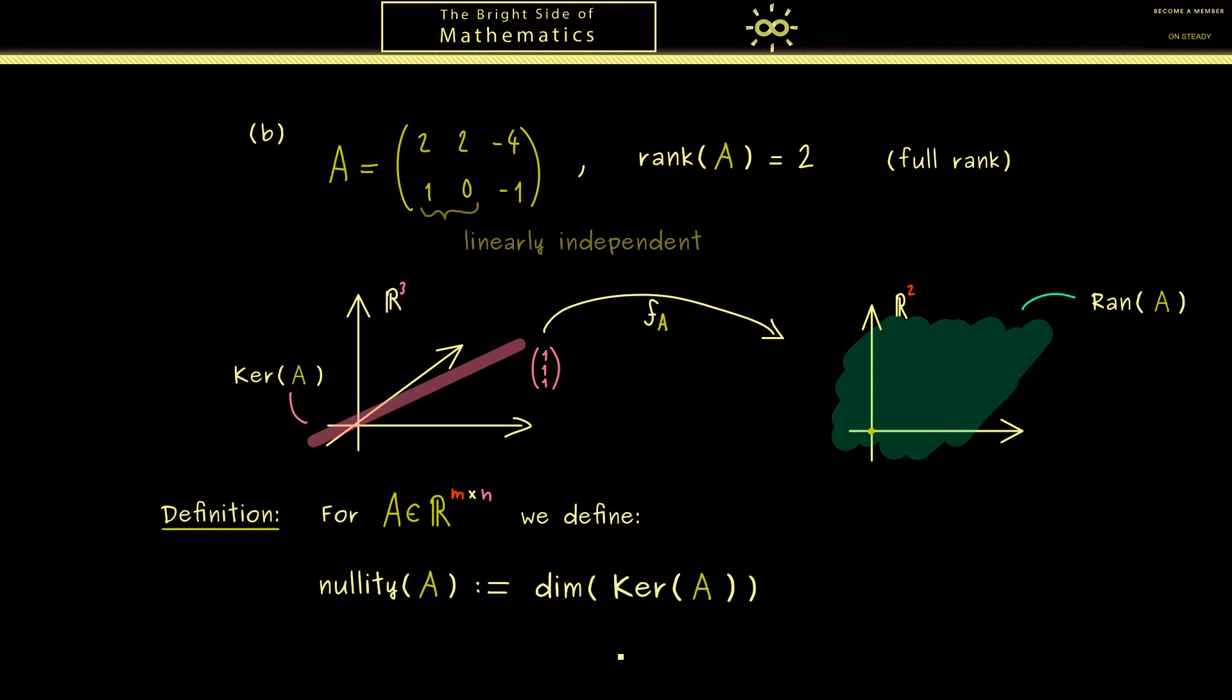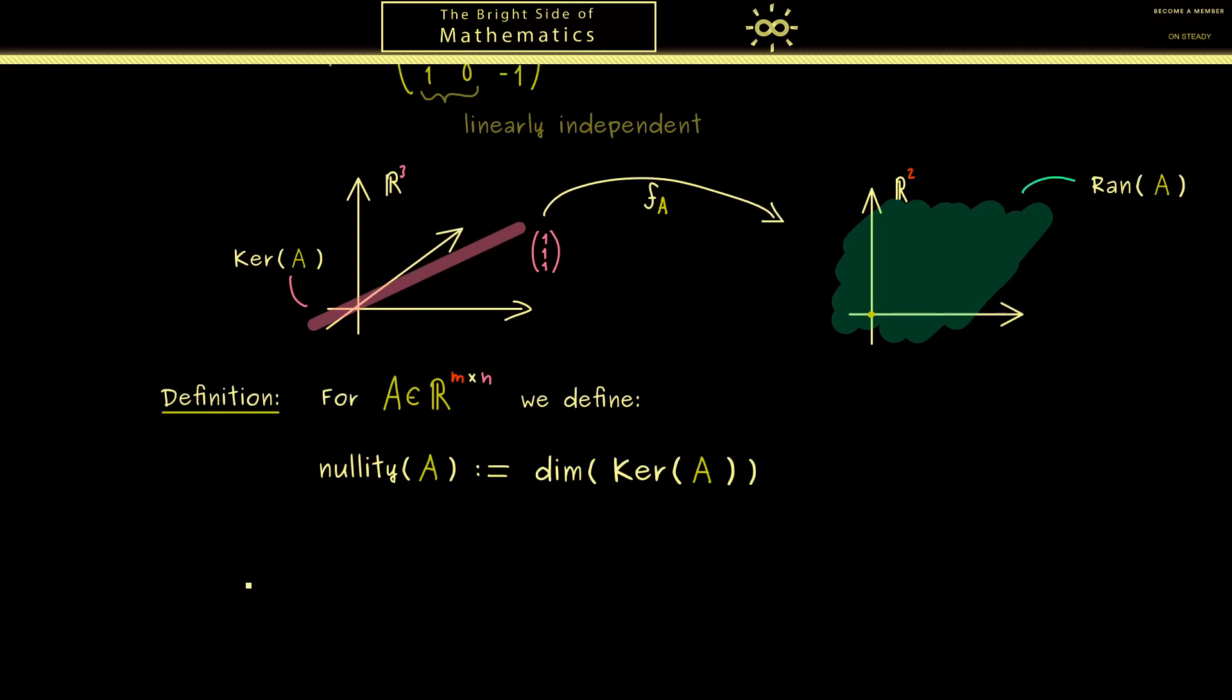As you might have already guessed, this is just the name for the dimension on the left hand side. In other words, the dimension of the kernel of the given matrix A. So you see, it's not complicated at all. It's called nullity because it's about the space that is sent to zero. Moreover, please note, the nullity is a non-negative integer between zero and n. Okay, with this, you now know these two terms here, which explain the name of our theorem.